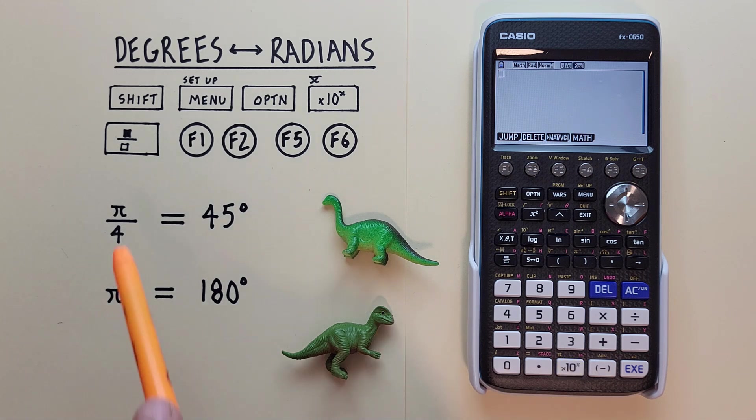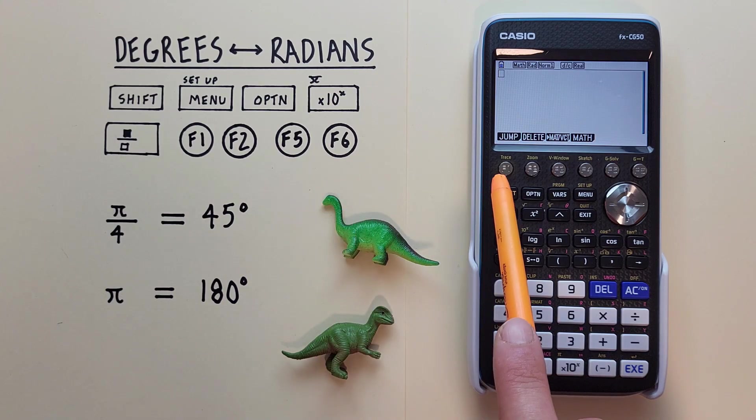The Fraction key that looks like this, located here. And the F1, F2, F5, and F6 keys that look like this, located across the top here.